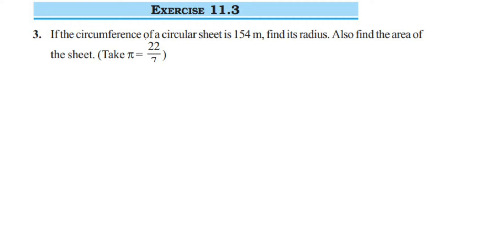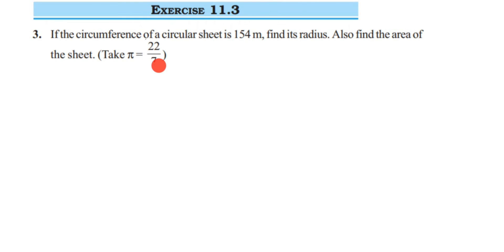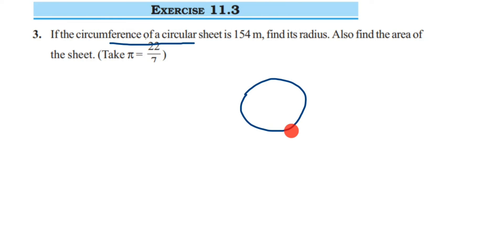Here's a question on Exercise 11.3, third question, from the Perimeter and Area chapter of Class 7. The question is: if the circumference of a circular sheet is 154, find its radius and also find the area of the sheet. They have given pi as 22/7. We have a sheet in the shape of a circle, and circumference means the boundary — for other shapes you call it perimeter, but for a circle we call it circumference. The circumference is given as 154.